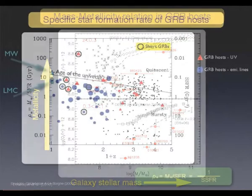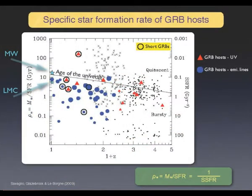So why is that? Another thing we know is that host galaxies are normally star-forming galaxies. This relation — stellar mass versus star formation rate — tells you how long it takes for a galaxy to build the stellar mass as a function of redshift.